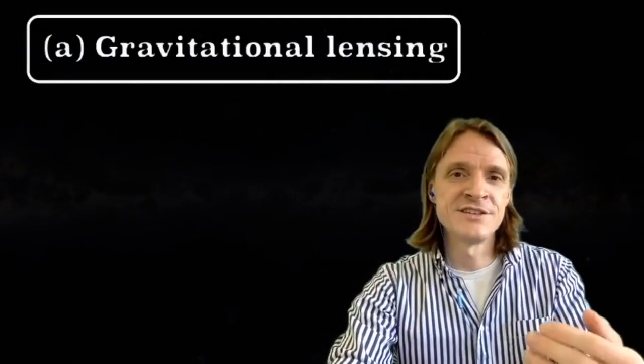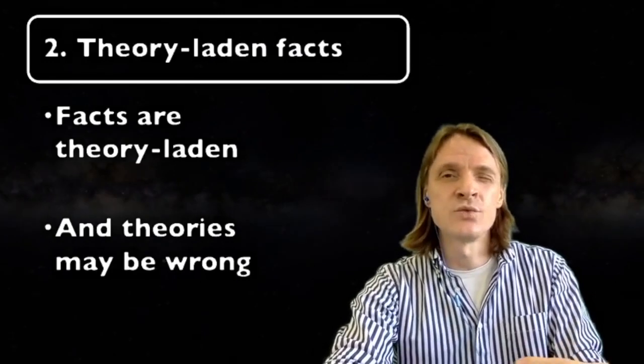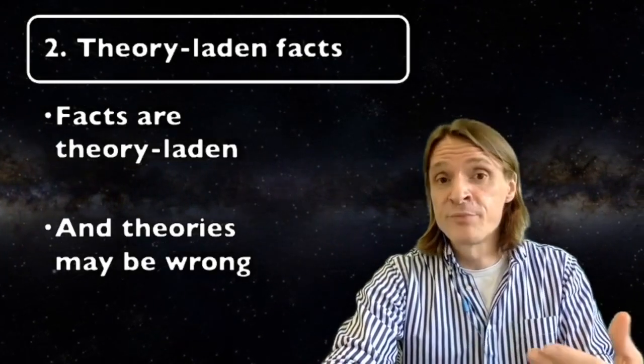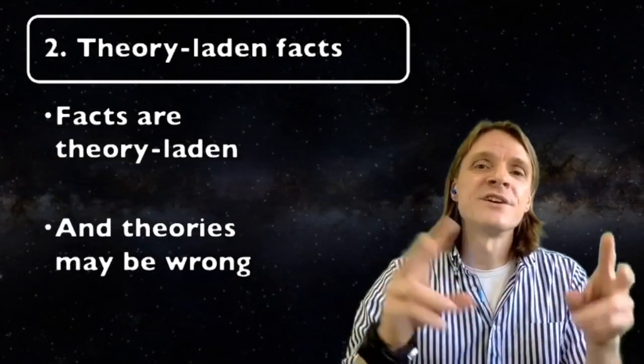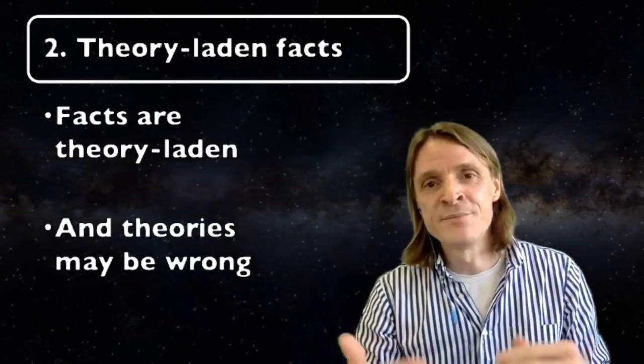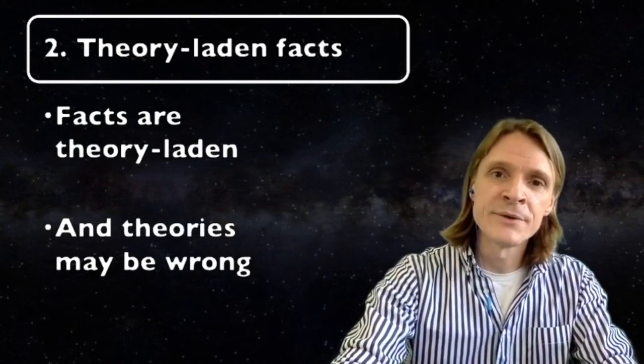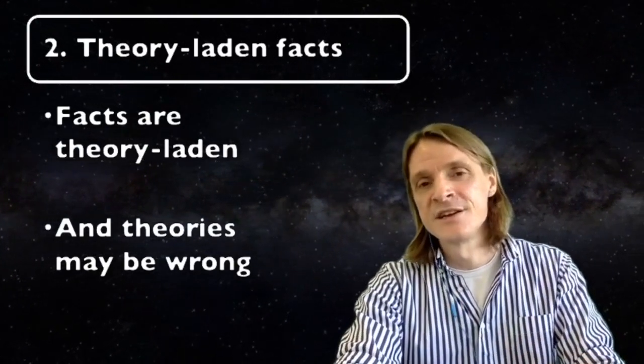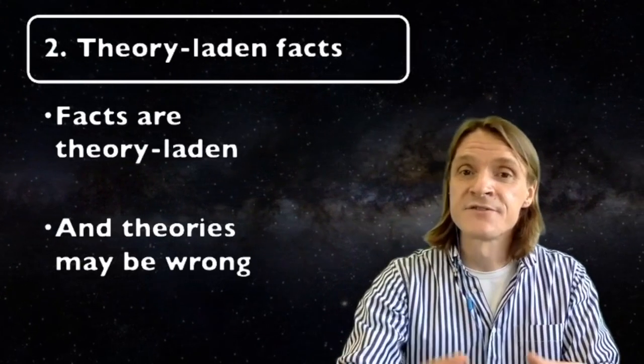So do you see why we cannot simply say that science is objective because it's based on observations. All observations need to be interpreted and we interpret them on the basis of a theory or our prior knowledge. So any observational fact already bears the influence of this theory. Facts are theory laden and theories may be wrong. Hence facts may be wrong.